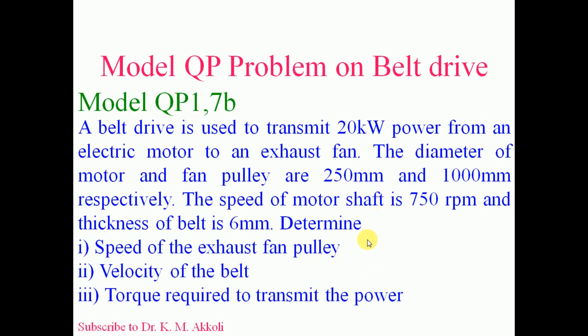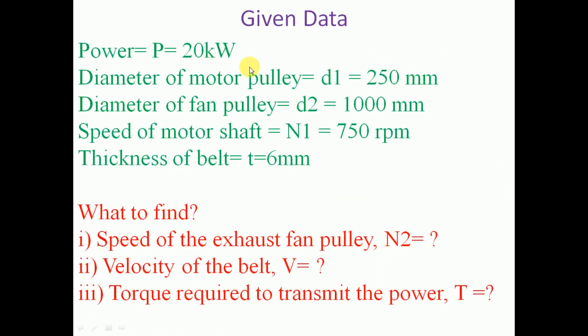An electric motor is used to run the exhaust fan. The electric motor and exhaust fan both have pulleys and these two are connected using a belt drive. The power to be transmitted is 20 kilowatt. The diameters of the pulleys connected to the motor and the fan are given, the speed of the motor shaft is given as 750 rpm, and the thickness of belt is also considered.